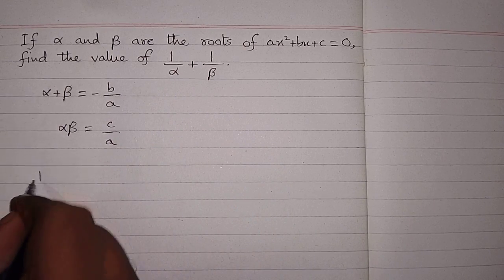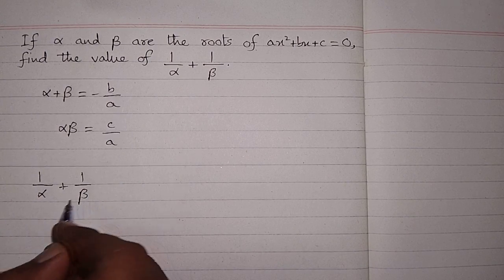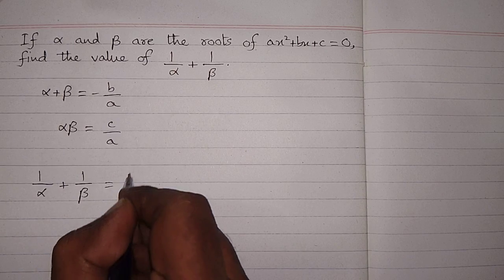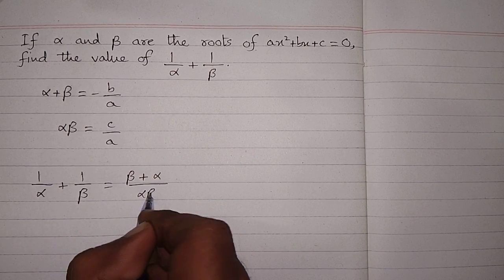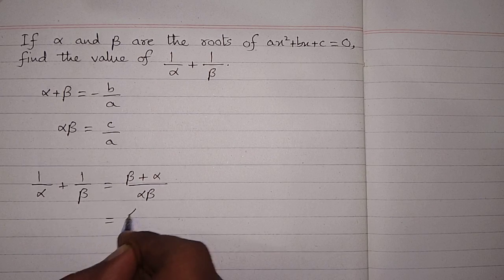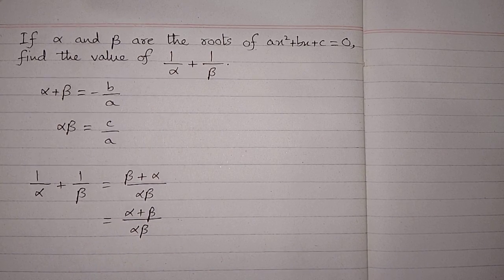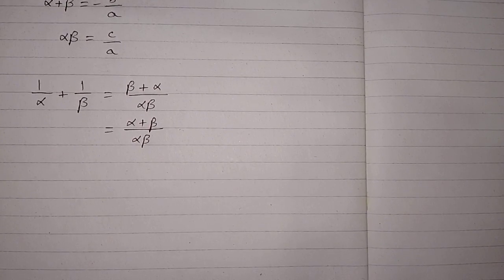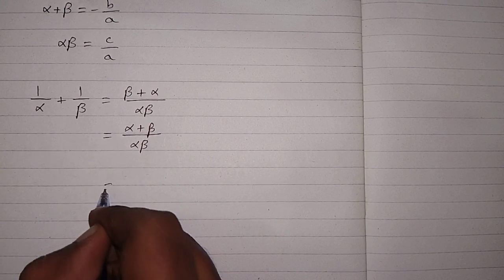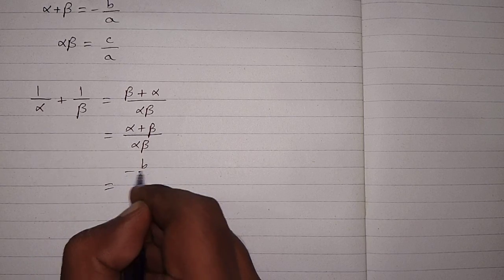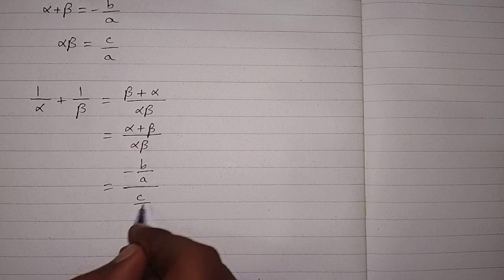Now we will find the value of 1 upon alpha plus 1 upon beta. So 1 upon alpha plus 1 upon beta equals beta plus alpha upon alpha beta, which can be written as alpha plus beta upon alpha beta. We can put the value of alpha plus beta, which is minus b upon a, and alpha beta is c upon a.